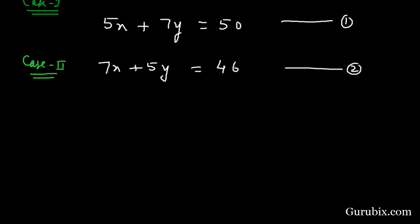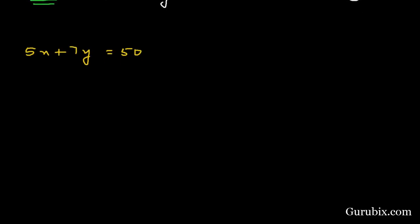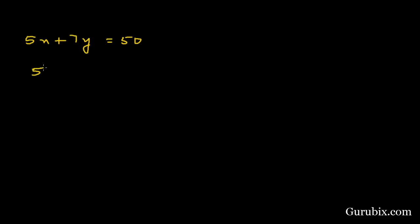We start with equation number 1: 5x + 7y = 50. We shall write the value of x in terms of y. Then 5x = 50 − 7y, which means x = (50 − 7y) / 5.